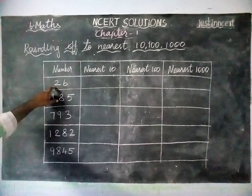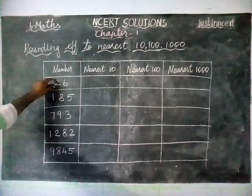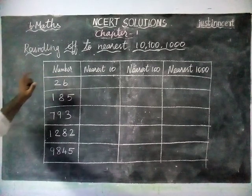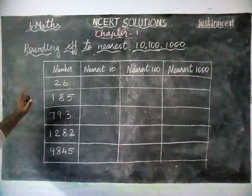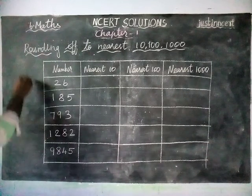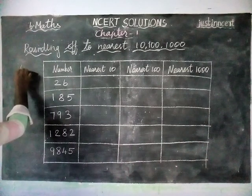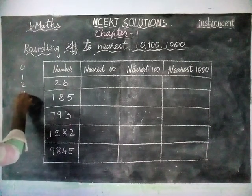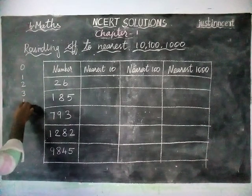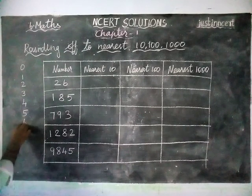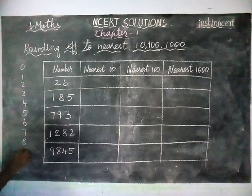The first number we have taken is 26. When we are rounding off, this concept is very important. Listen carefully: 0, 1, 2, 3, 4, 5, 6, 7, 8, 9.